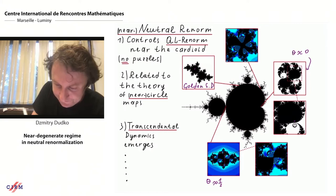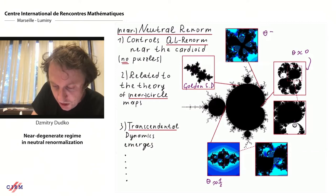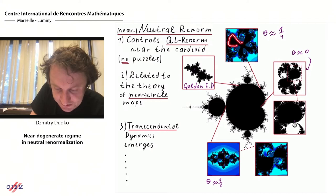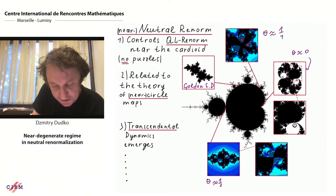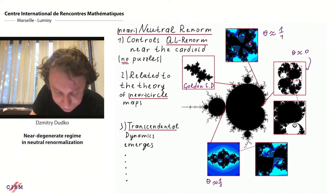When the rotation number is close to one-half, the Siegel disk starts to develop parabolic fjords, but it is still a nice object. When the rotation number is close to one-quarter, the Siegel disk has four parabolic fjords. It rotates and wants to degenerate, developing parabolic fjords.